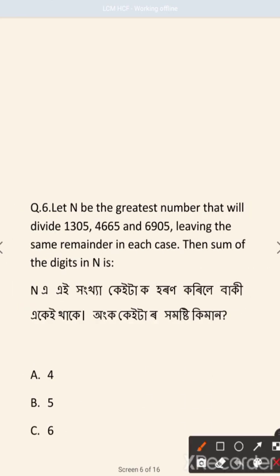Let N be the greatest number that will divide 1305, 4665, and 6905, leaving the same remainder in each case. Then the sum of the digits in N is required.